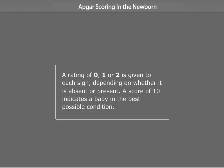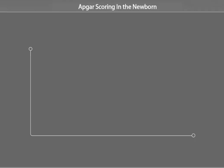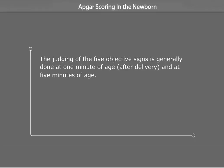A rating of 0, 1, or 2 is given to each sign depending on whether it is absent or present. A score of 10 indicates a baby in the best possible condition. The judging of the five objective signs is generally done at one minute of age after delivery and at five minutes of age.